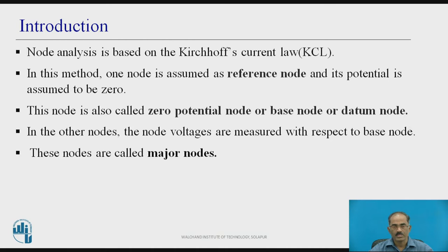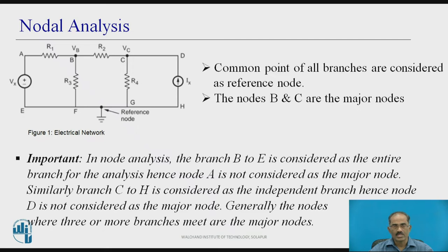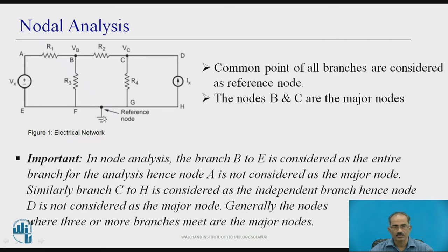These nodes are called major nodes. We can see in this diagram — it consists of a reference node, also called datum node, and B and C are major nodes. The node voltage VB for node B is measured with respect to this datum node, and at node C, the voltage VC is also measured with respect to this reference node. The common point of all branches is considered as the reference node.